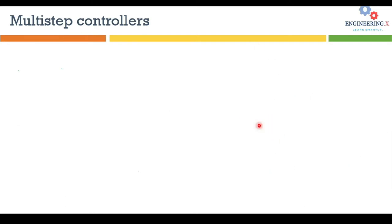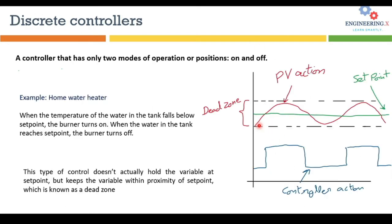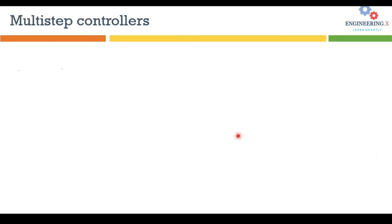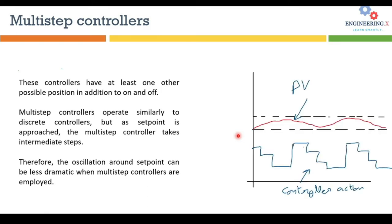Compared to discrete controllers, the range or width of the dead zone is smaller in multi-step controllers, and there is an intermediate step visible between the on and off positions.